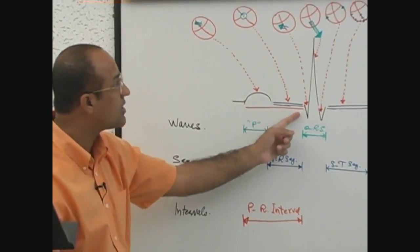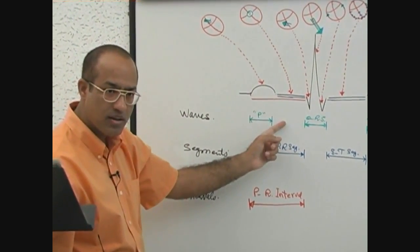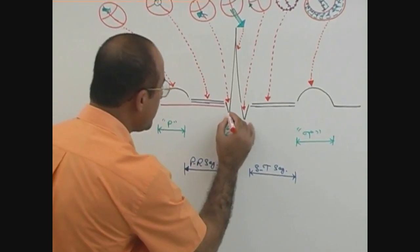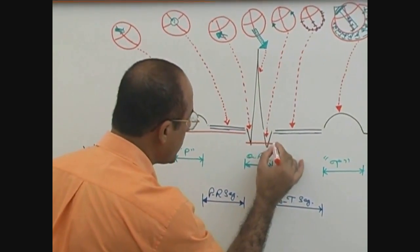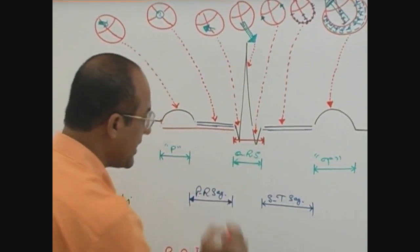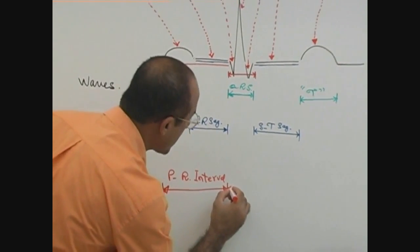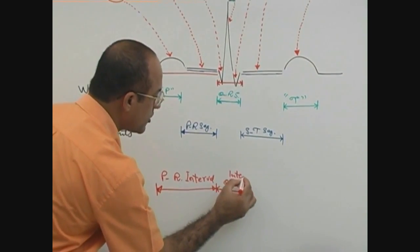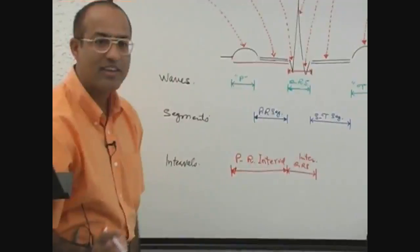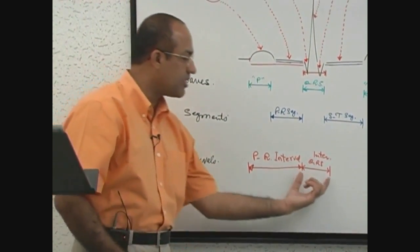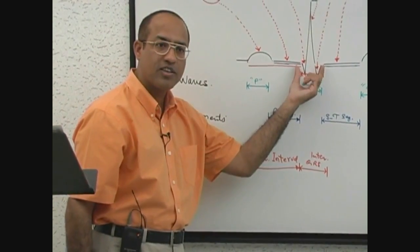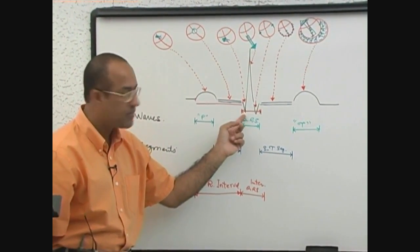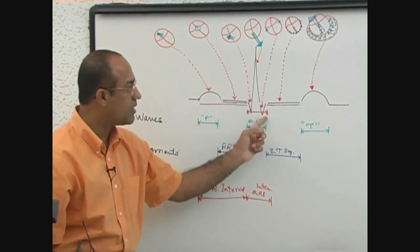The PR segment signifies only AV nodal conduction. The next interval is the QRS interval — Q, R, and S together — and because there is more than one wave, this can be regarded as an interval. The QRS interval is the duration during which current is spreading over ventricular tissue: septal depolarization, major ventricular depolarization, and basal depolarization.